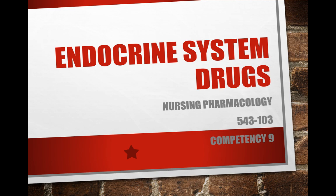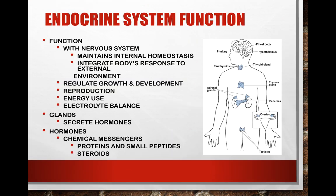Let's get started with the endocrine system. First, we'll do a brief review of its function. The endocrine system works in tandem with the nervous system to maintain homeostasis in the body. It integrates the body's response to the external environment, and it also regulates growth and development, reproduction, use of our energy, and electrolyte balances.